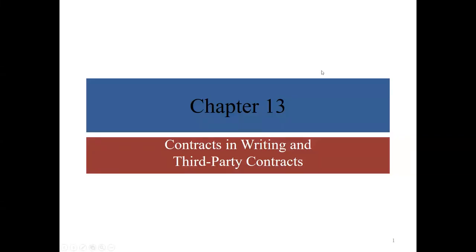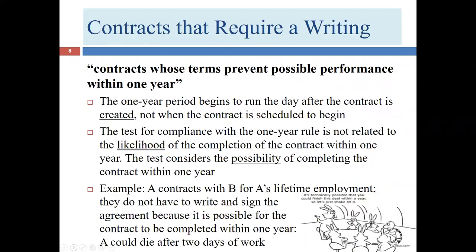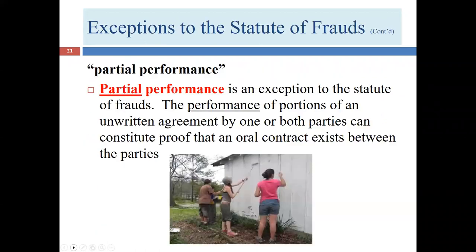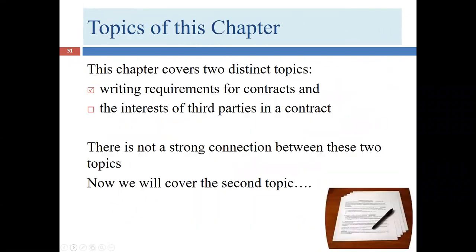Welcome to our fourth lecture covering chapter 13 of our textbook, titled 'Contracts in Writing and Third-Party Contracts.' In our first three lectures, we covered writing requirements for contracts — specifically what types of contracts are covered by the statute of frauds, exceptions to the statute of frauds, and the parol evidence rule. Now we're ready for our second topic: third-party contracts.